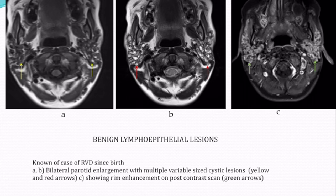A known case of HIV since birth showed bilateral enhancement of the parotid gland with multiple solid-cystic lesions and homogenous rim enhancement on post-contrast scan. The diagnosis given was benign lymphoepithelial lesions.